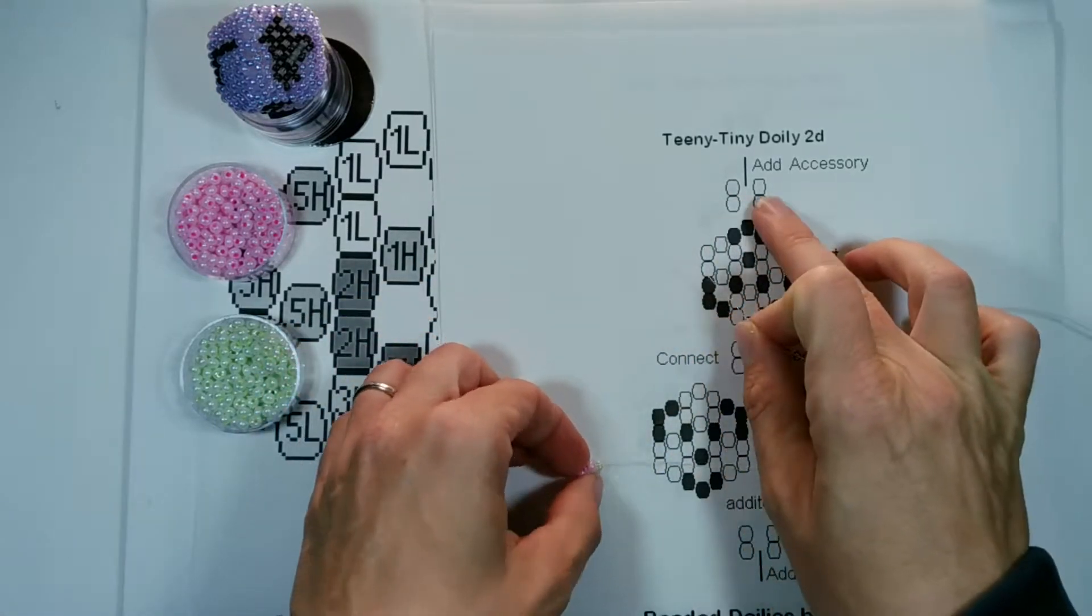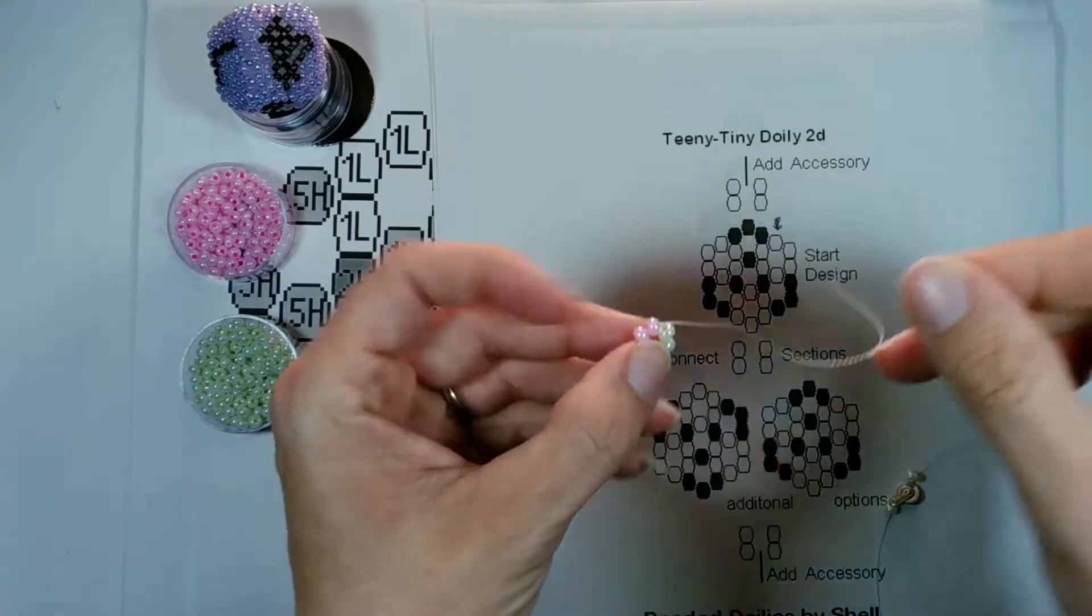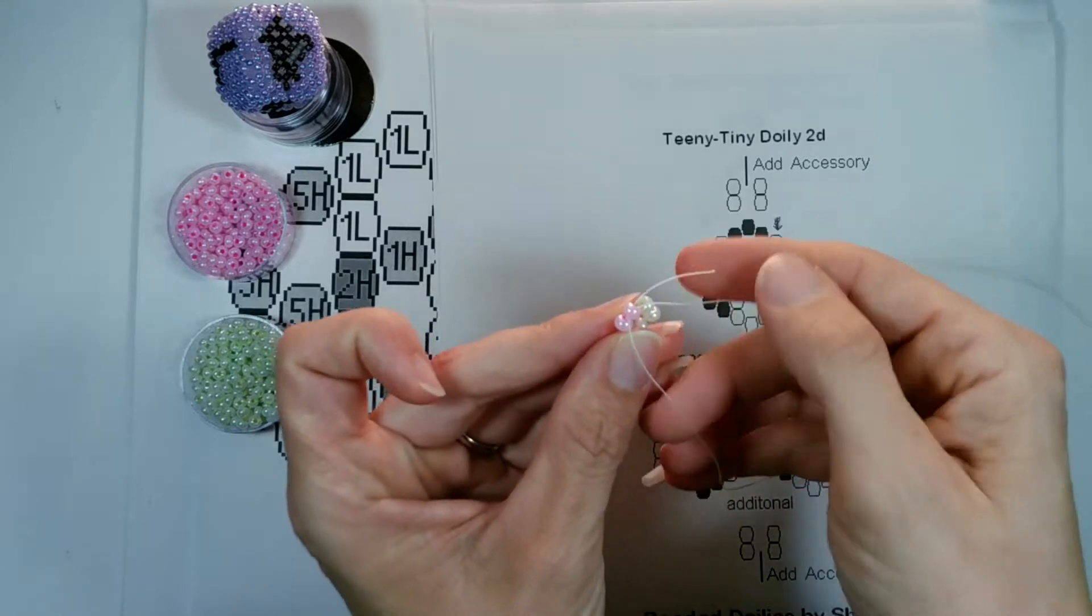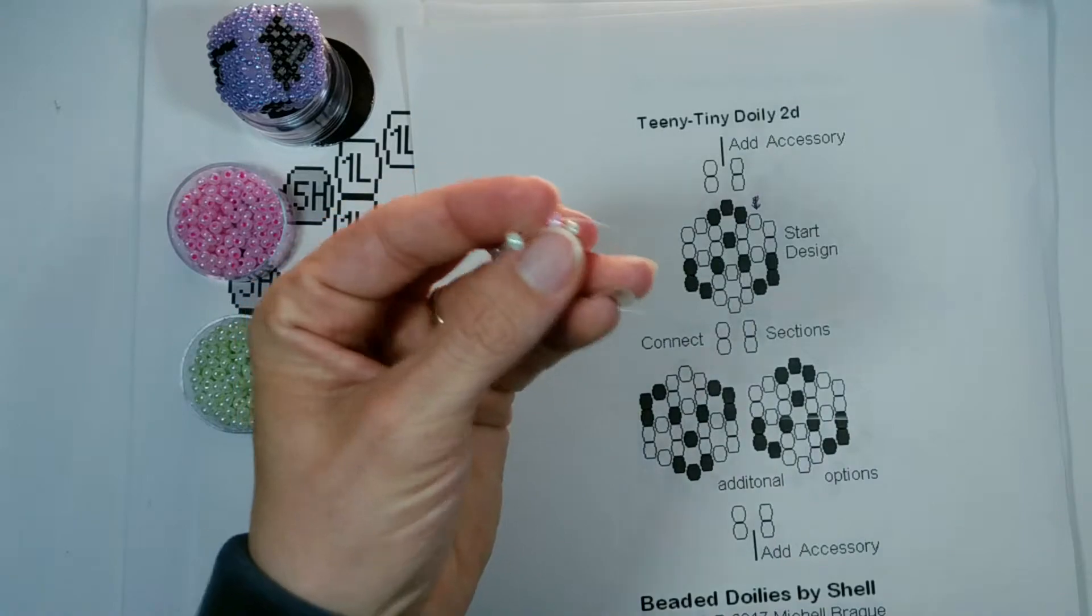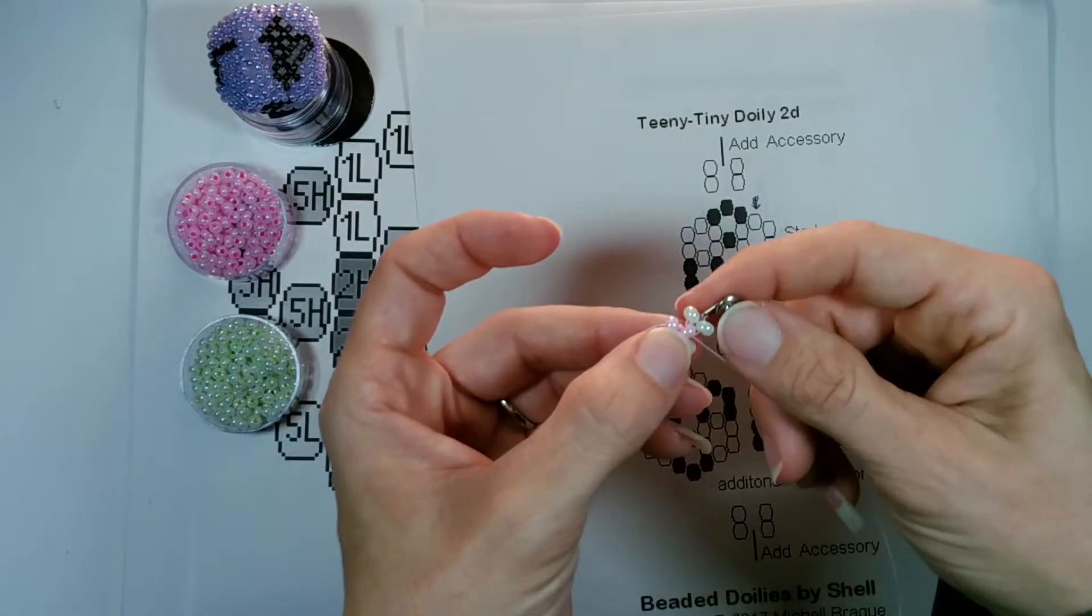And then where our string is coming out of that top bead, we want to go through the opposite side so that it comes out on the same side. And there you have your connections and your accessory.